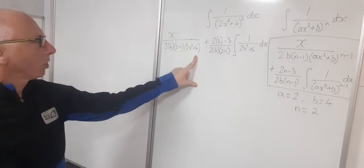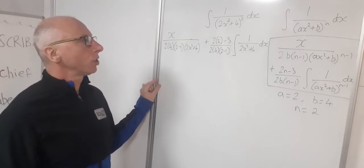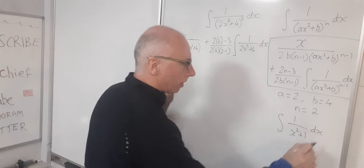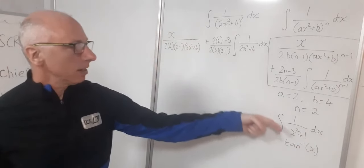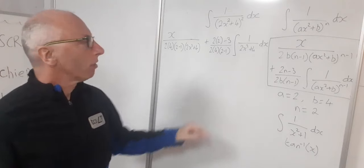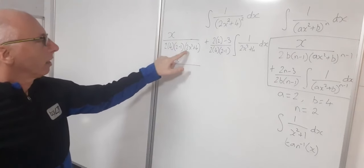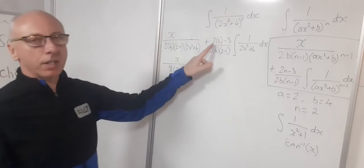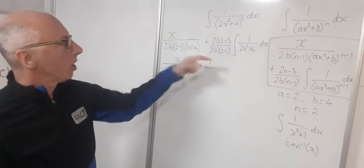That's all pretty straightforward — we can just evaluate it. The first part we can evaluate no problem. The integral part we're not quite ready to evaluate just yet, but what we can achieve is to get it into the form of 1 over (x² + 1) dx, which is the well-known integral giving the inverse tangent of x. So working left to right: 2×4 is 8 times 1 is 8, so the denominator is 8(2x² + 4). For the constant multiple on the integral: 2×2−3 is 1, and 2×4×1 is 8.